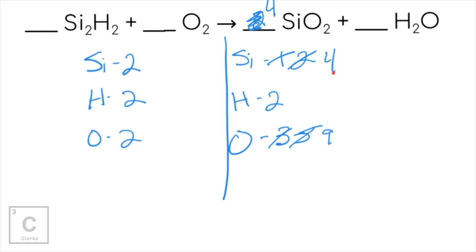This is going to be two tips in one. When you get stuck, take the coefficients you've already written and multiply them by two. Now let's readjust — we have four silicones, four times two is eight plus one, that is nine oxygens. We're going to leave oxygen until last and keep going. We've got four silicones here, so I'm going to put a two on that compound to get four silicones in the product. That does mess up my hydrogen — two times two is four — so I need to fix it.